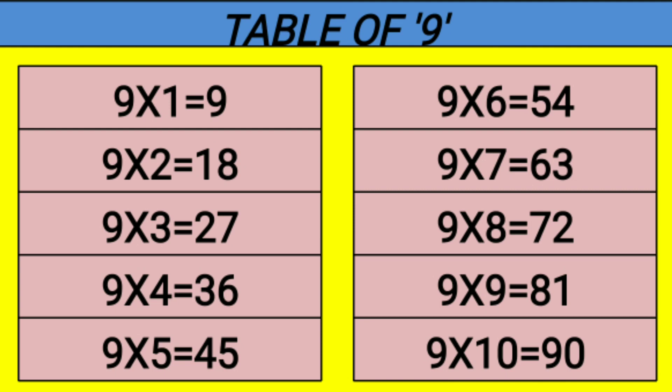Table of 9. 9 1s are 9, 9 2s are 18, 9 3s are 27, 9 4s are 36, 9 5s are 45, 9 6s are 54, 9 7s are 63, 9 8s are 72, 9 9s are 81.